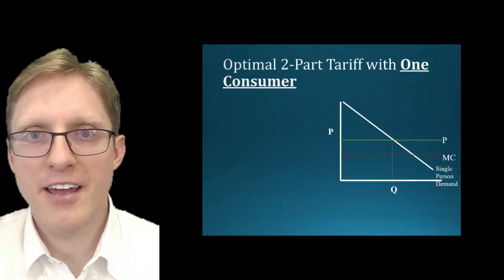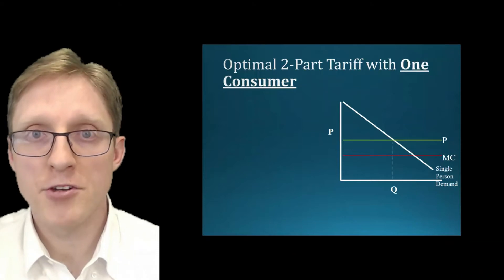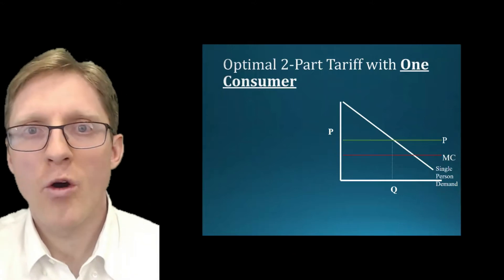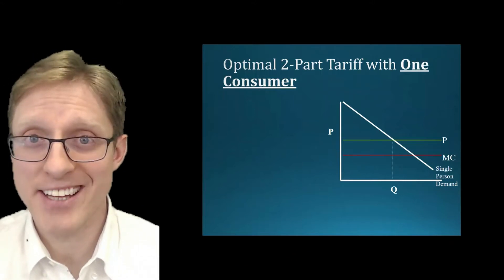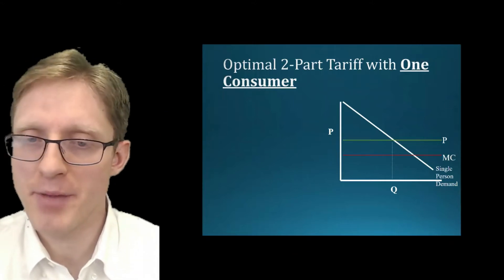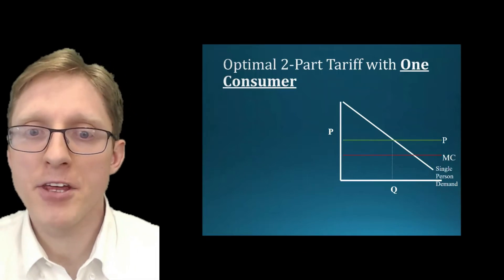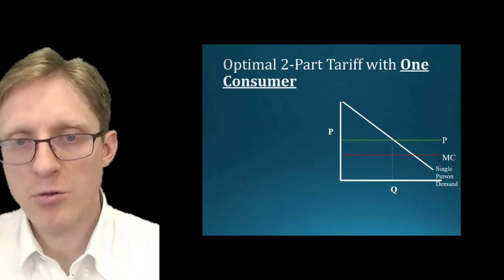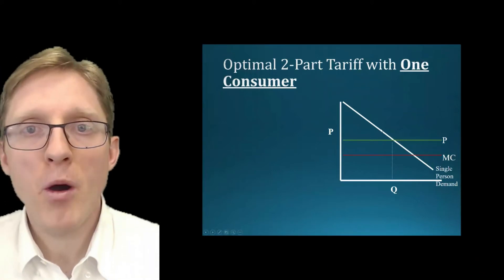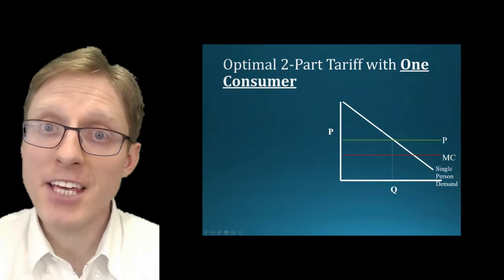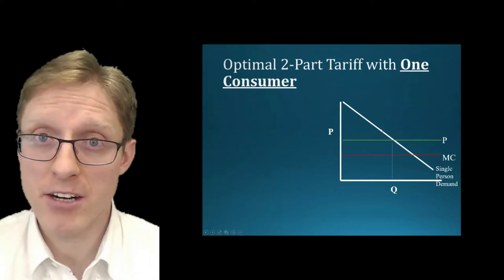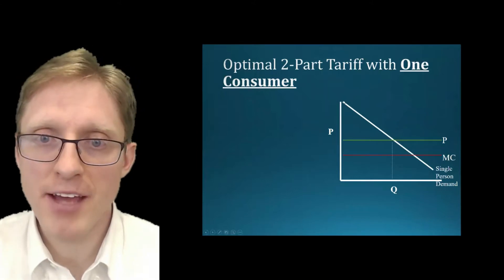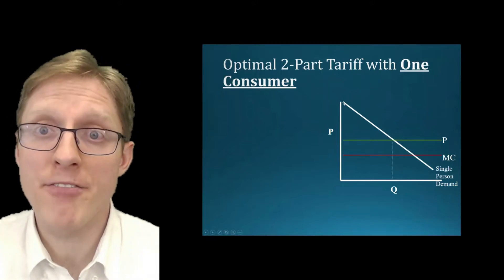Let's consider an example to show what happens with a two-part tariff when there's only one consumer in the market — or a bunch of consumers who are all exactly identical with exactly identical demands. On the vertical axis we have price, on the horizontal axis we have quantity, and this downward sloping line represents a single consumer's inverse demand curve. The highest point on this inverse demand tells us how much that consumer would pay for the first unit they buy.